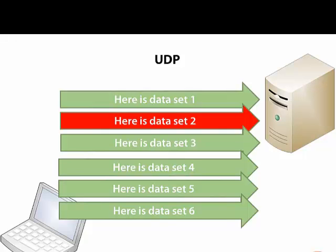Usually we care about the data — we need all the data — so TCP is the preferable choice. Web pages are a great example. If it takes three data sets to transmit a web page to your computer, you can't have one of the data sets missing and still be able to render the page.